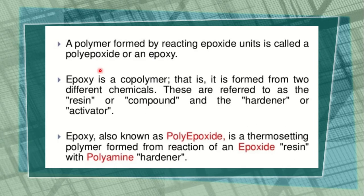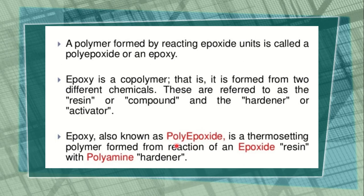A polymer formed by reacting epoxide units is called a polyepoxide or an epoxide. Epoxy is a copolymer — it is formed from two different chemicals, referred to as the resin or compound and the hardener or activator. Epoxy, also known as polyepoxide, is a thermosetting polymer formed from the reaction of an epoxide resin with a polyamine hardener. This is the general introduction of epoxy resin.